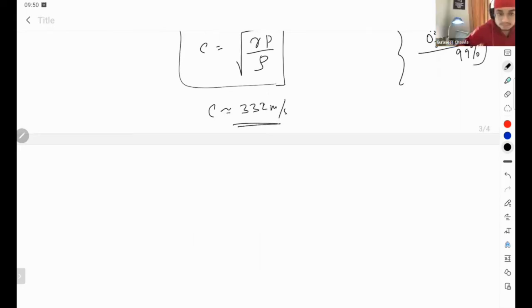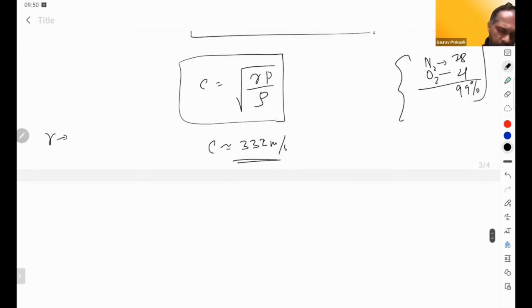So putting this gamma is called as Laplace correction to the formula. This is what he made, the changes. Understood? I hope you understand.